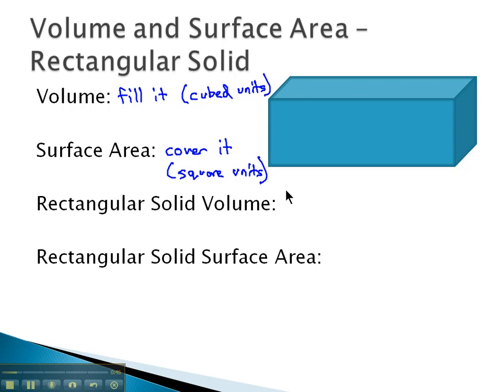On a rectangular solid, there's several dimensions that have to be considered. One would be the length of it, one would be the width or depth, and another would be the height, how tall it is. And the way we calculate the volume of a rectangular solid is we multiply the length times the width times the height.